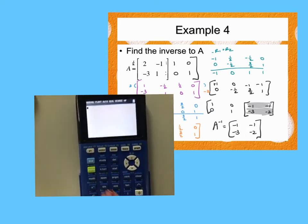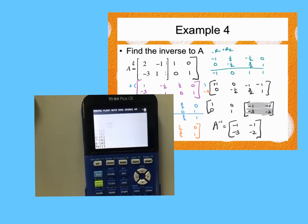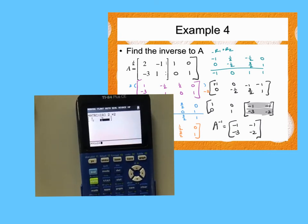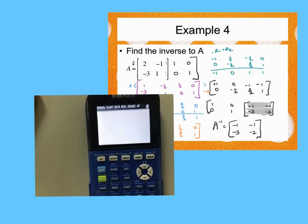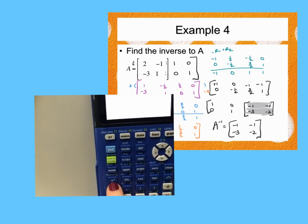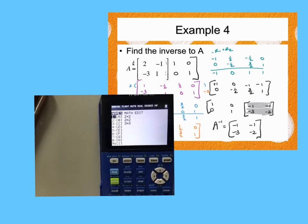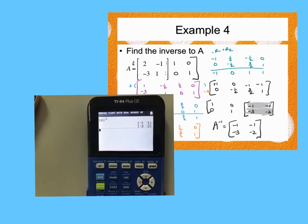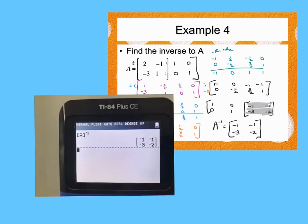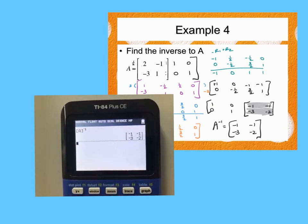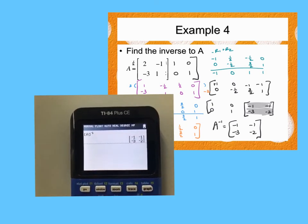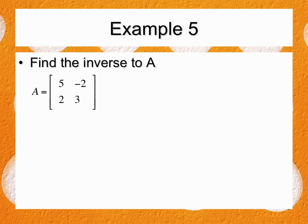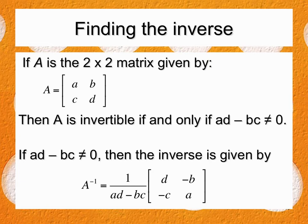On your calculator: go to second, matrix, then edit. Set it as a 2×2 and type in your matrix. Then go back, pull up the matrix name, hit the X⁻¹ button — not second — and press enter. It gives you the inverse. Good for checking, and one homework problem specifically asks you to find it this way. Take a picture of that. Note: you won't have graphing calculators on the test.